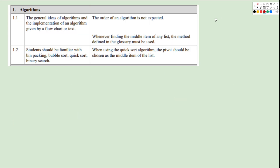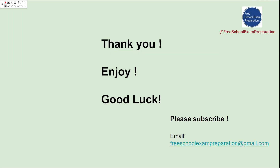Let's recap the syllabus. We discussed algorithms in 1.1 in the previous lecture. Today we covered bubble sort and quick sort. For quick sort, the pivot is chosen as the mid-item using position (n + 1) / 2 — if it's an integer, keep it; otherwise round up. That's everything for today's lecture. We hope you enjoyed it and wish you good luck with your exam. Please subscribe to our YouTube channel, Free School Exam Preparation. Thank you.